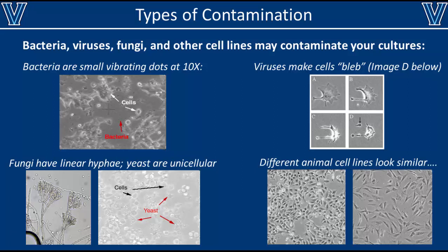Last but definitely not least, the most dangerous type of contamination is cross-contamination of other similar cell lines. For example, HeLa and NIH3T3 cell lines are completely different cells from completely different species, but they look largely similar. Therefore, cross-contamination can go unnoticed for a very long time. While it may or may not affect the way your cells grow, it will affect your experimental data. It is absolutely essential that you are working with the cell line you think you are.